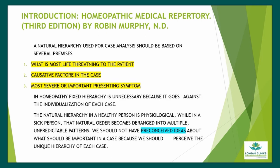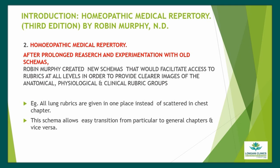After prolonged research and experimentation with old schemas, Robin Murphy created new schemas that would facilitate access to rubrics at all levels, providing clearer images of the anatomical, physiological, and clinical rubric groups. For example, all lung rubrics are given in one place instead of scattered in chest chapters. This schema allows easy transition from particular to general chapters and vice versa.